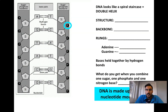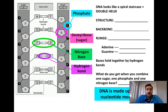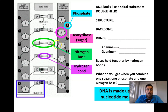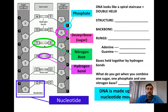DNA looks like a spiral staircase — a double helix. When flattened out, it contains a phosphate, a sugar, and a nitrogen base, either A, T, C, or G. Those nitrogen bases are paired together with hydrogen bonds, which hold adenine, thymine, cytosine, and guanine together. One phosphate, one deoxyribose sugar, one nitrogen base, and one hydrogen bond to another base is called a nucleotide — the simplest functional unit of DNA.